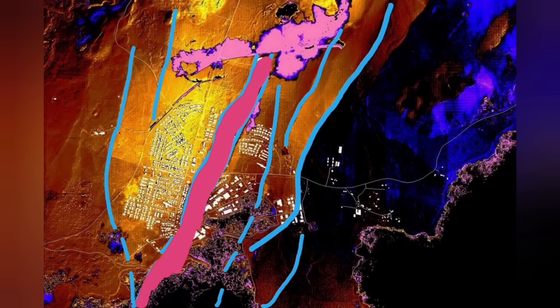Through this graben that you can see in the middle part, and the fault lines and the horst in the middle, we had cracks in Grindavik but no eruption. Magma was not there.